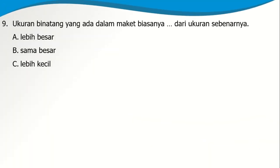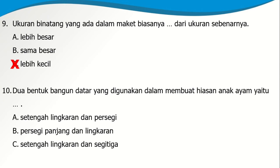Soal nomor 9: Ukuran binatang yang ada dalam maket biasanya lebih kecil dari ukuran sebenarnya. Namanya saja maket miniatur, jadi harusnya lebih kecil. Soal nomor 10: Dua bentuk bangun datar yang digunakan dalam membuat hiasan anak ayam. Kita pernah membuat hiasan anak ayam dari kertas origami yang digunting. Jawabannya adalah C: setengah lingkaran dan segitiga.